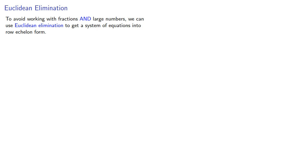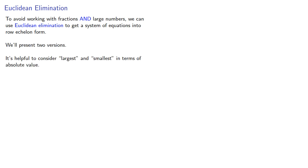To avoid working with fractions and large numbers, we can use Euclidean elimination to get a system of equations into row echelon form. We'll present two versions. It's helpful to consider largest and smallest in terms of absolute value. First, a traditional approach that works down through the rows.